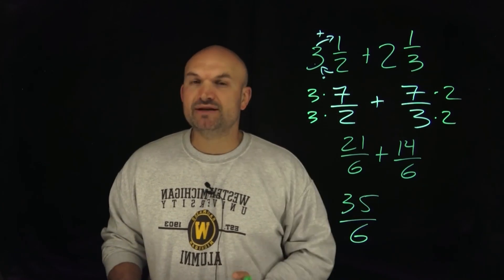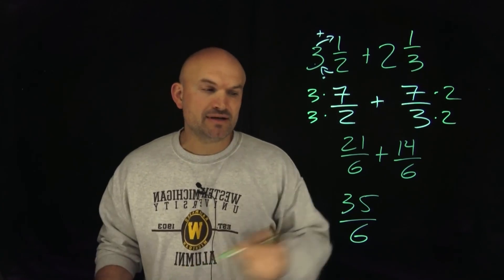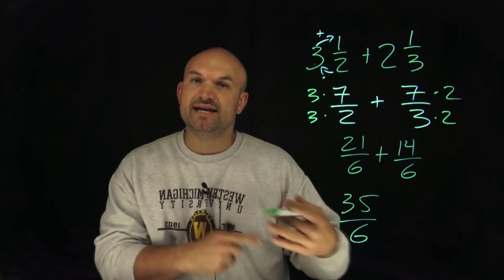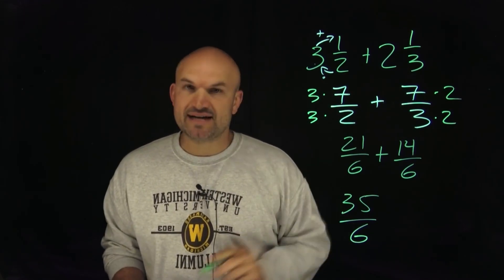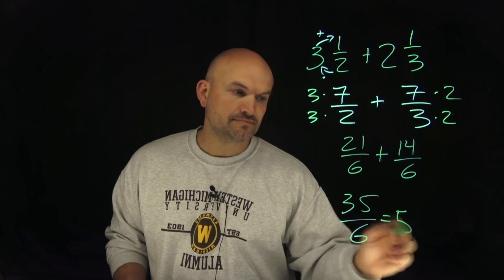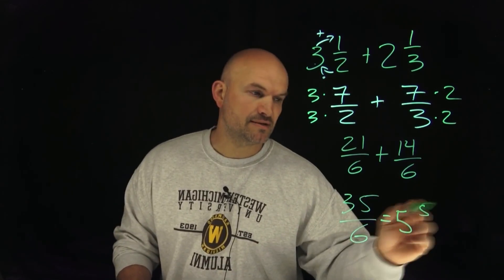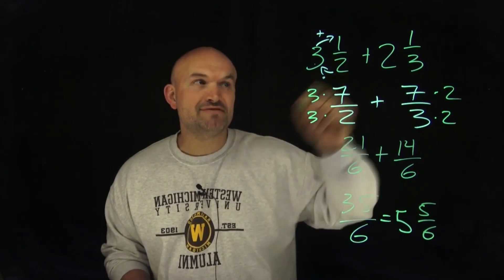To rewrite this back into a mixed number, say how many times does 6 divide into 35, and then take the remainder and put that over my denominator. So 6 divides into 35 five times, which is going to have a remainder of 5, and then I'll put that over my denominator 6. And that is going to be your answer for 3 halves plus 2 thirds.